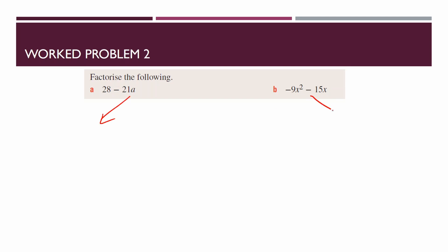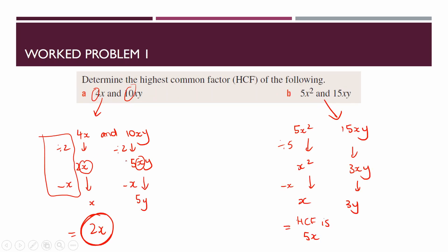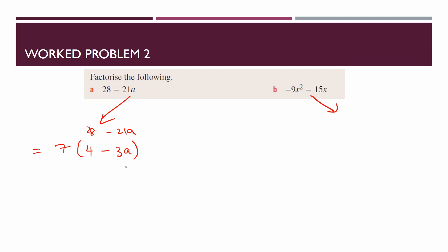For 28 - 21a, what number goes into both 28 and 21? Seven goes into both: 28 divided by 7 is 4, and 21 divided by 7 is 3. Do they have a common letter? No. So the factorized form is 7(4 - 3a).